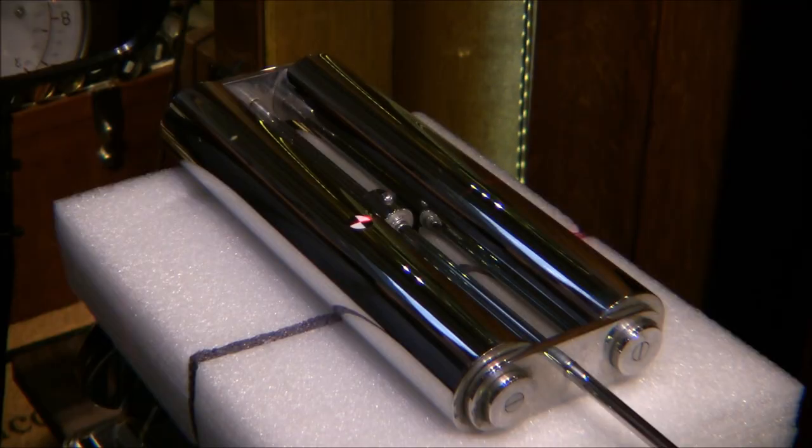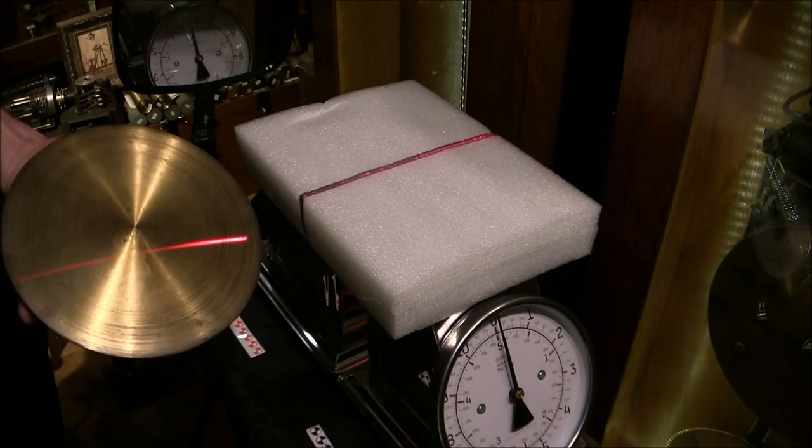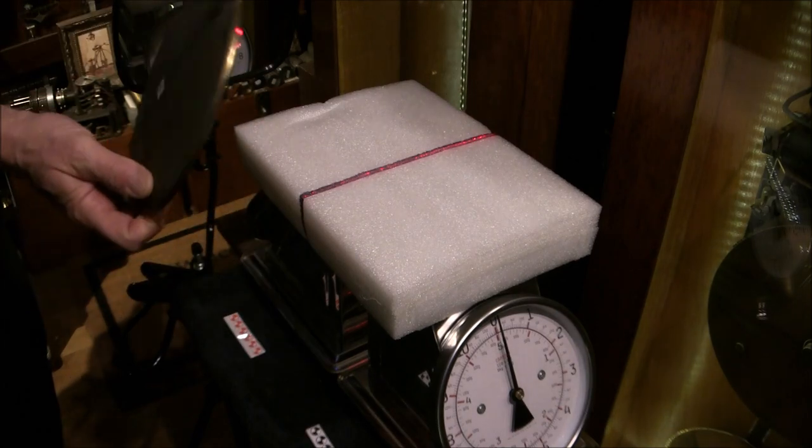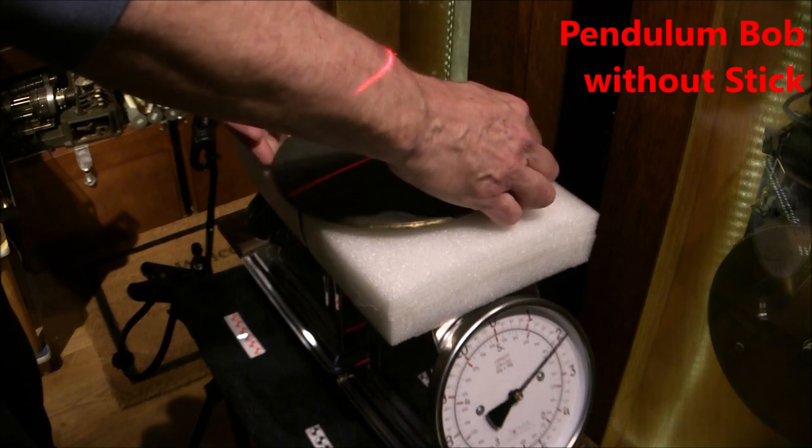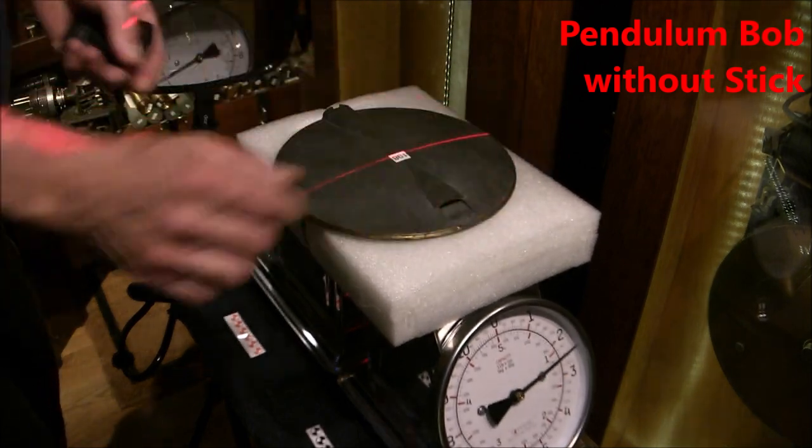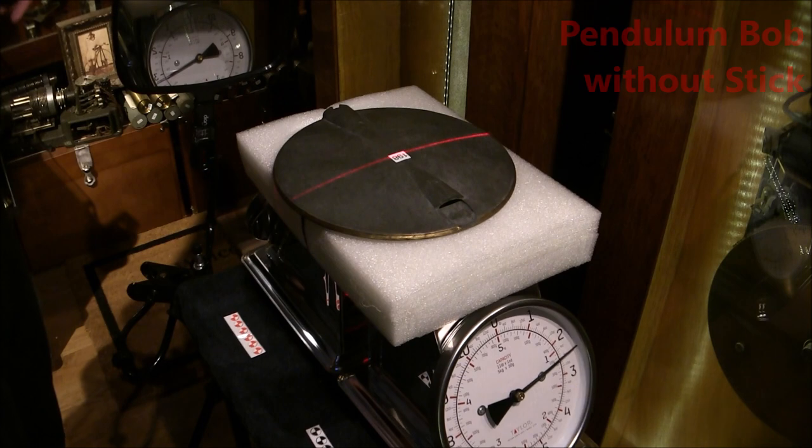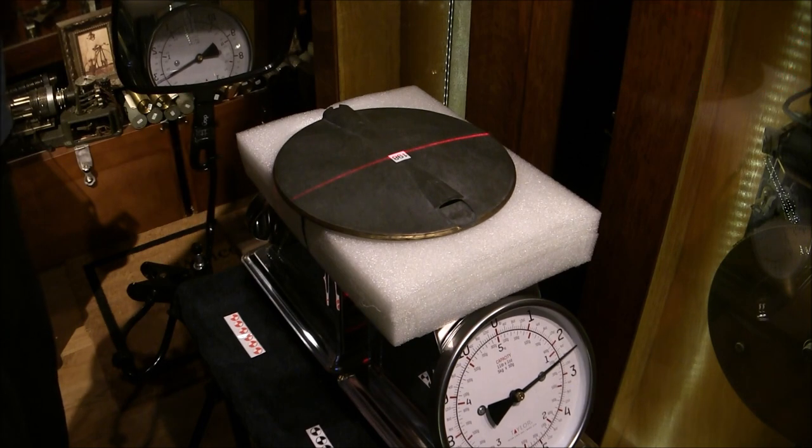Finally, I'll put a center of gravity sticker on the laser line mark. Next, I'll find the center of gravity of the bob without a stick inserted, simply by placing the bob on the center of gravity machine and again moving it left or right until the weight on each scale is equivalent.